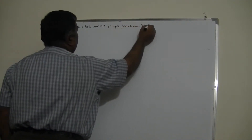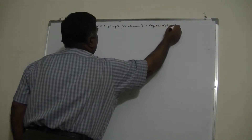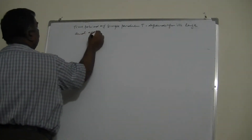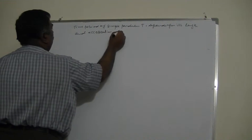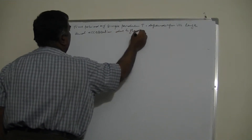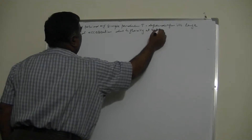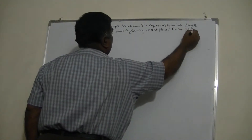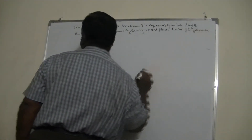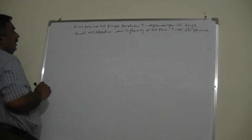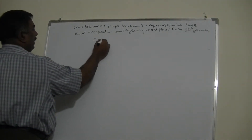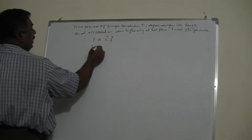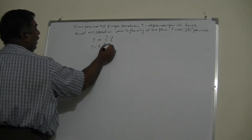Suppose the examiner tells you: the time period T of a simple pendulum depends upon its length l and the acceleration due to gravity g at that place — find its formula. We cannot find the exact formula, but we will find it in terms of constant k, which is a unitless constant. I write: T varies as l^x · g^y, so T = k · l^x · g^y.